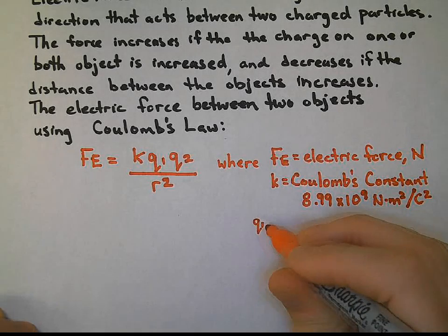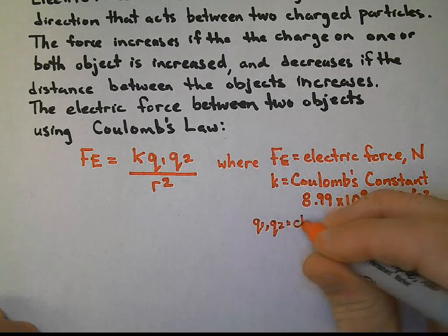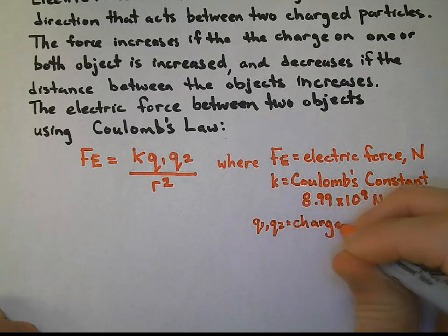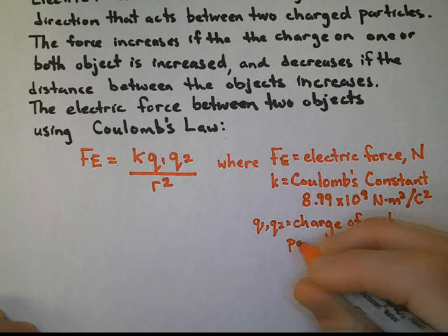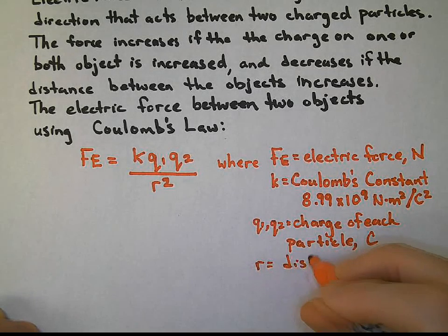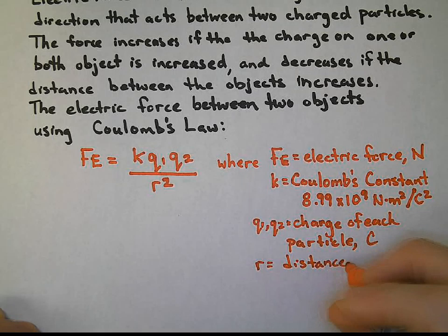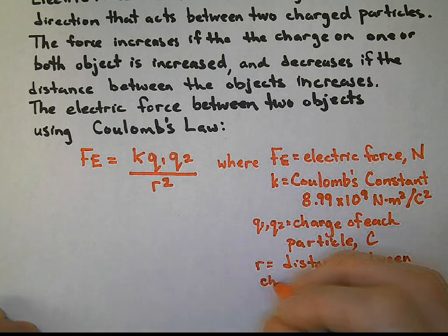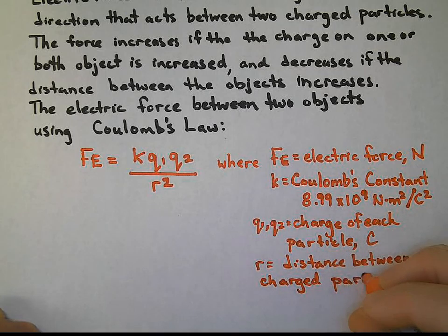Q1, Q2 are the charge of each particle measured in Coulombs, and R is the distance between the charged particles, which is in meters.